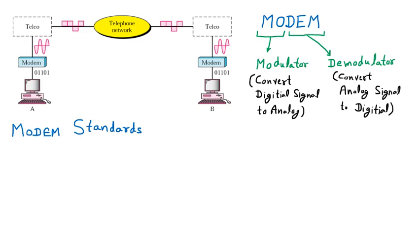We are discussing the modem standards — how many types of standards are there for the modem in the market. Talking about the modem standard, we have three categories: the first one is the Bell modem, the second is the ITU-T modem, and the third one is the Intelligent modem. So the first one is the Bell modem standard.